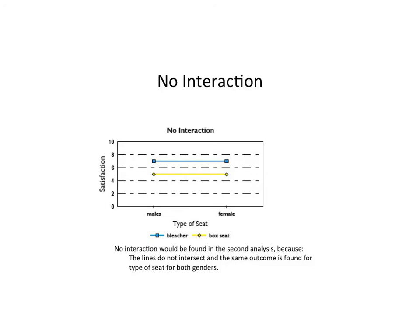Another possible outcome is that they don't interact at all — that satisfaction for males and females is not dependent on what type of seat they have. Males in box seats have the same satisfaction as females in box seats; males in bleacher seats have the same satisfaction as females in bleacher seats. If we see parallel lines, then chances are there's going to be no interaction, and we would accept the null hypothesis for our interaction hypothesis.